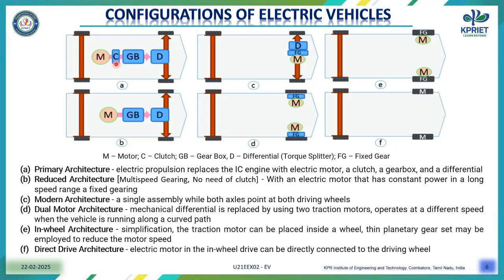The first is the primary architecture, where electric propulsion replaces the IC engine with an electric motor. The electric motor is connected with the clutch, gearbox, and a differential. This system is the primary architecture initially developed for the electric vehicle.